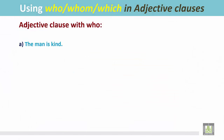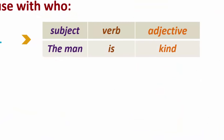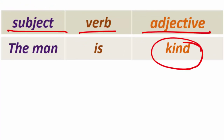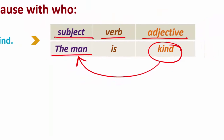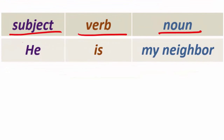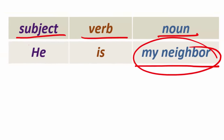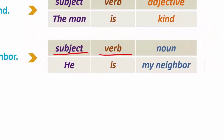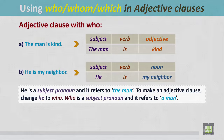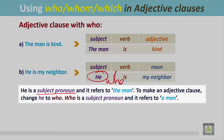See other examples. The man is kind — structure: subject, verb, adjective. 'Kind' is an adjective modifying the subject 'the man.' He is my neighbor — structure: subject, verb, and noun. 'My neighbor' is not an adjective; it is simply a noun. In these two sentences, 'he' refers to the same person — the man. He is a subject pronoun. To make an adjective clause, change 'he' to 'who.' Who is a subject pronoun and it refers to the man.